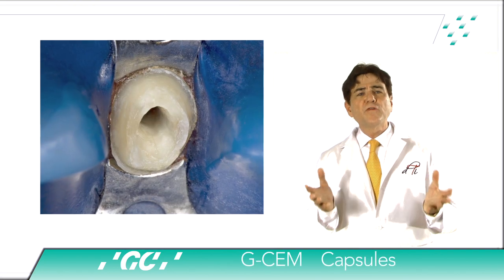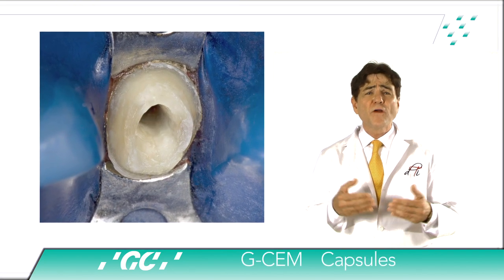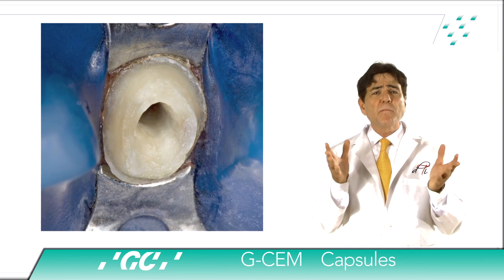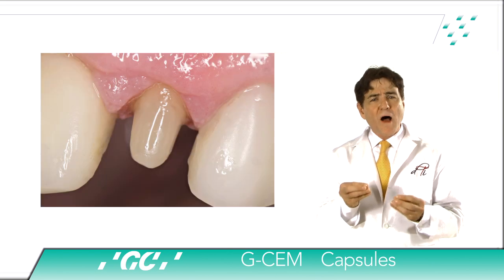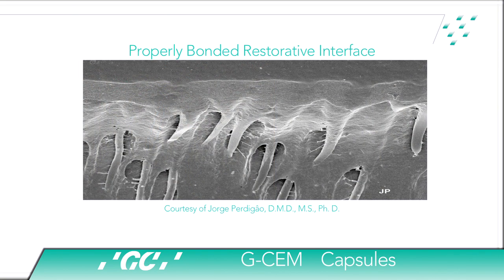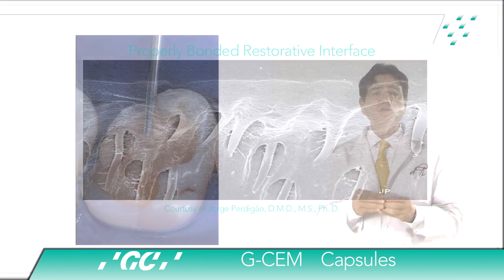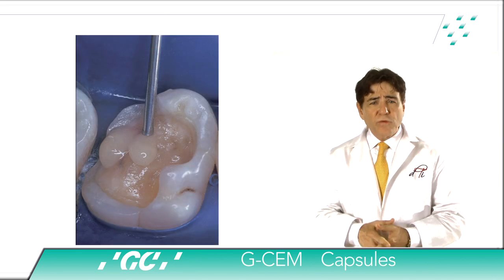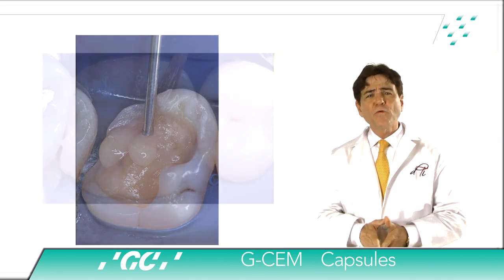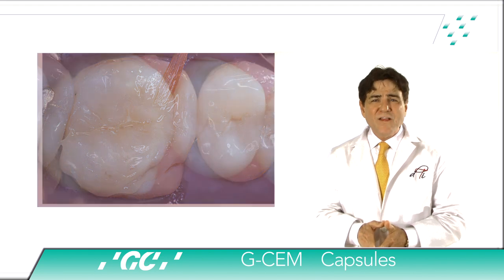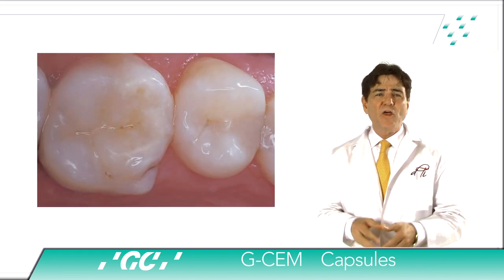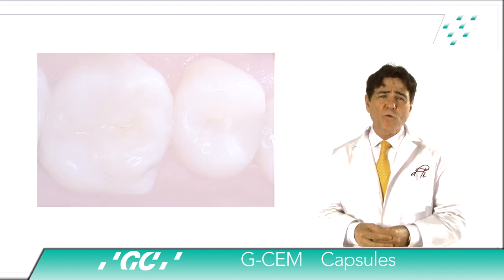The dental luting procedure involves cement adaptation to surface irregularities in a manner that prevents the restoration's dislodgement. The primary objective of each cementation procedure is to achieve a durable bond and good marginal adaptation of the luting material to both the restoration and the tooth. Successful cementation is essential for retention, clinical performance, and the longevity of any indirect restoration.